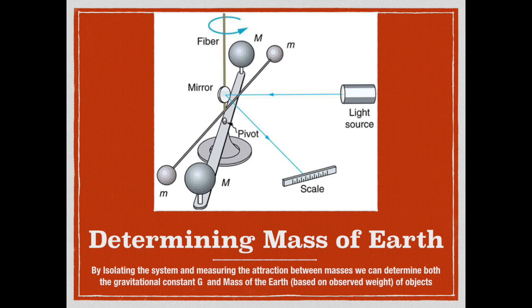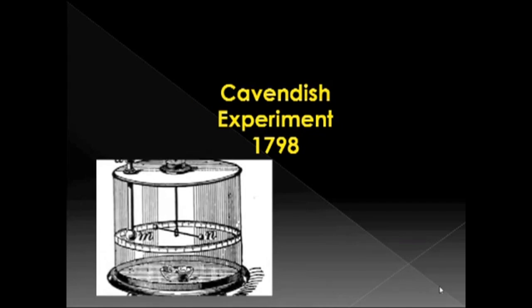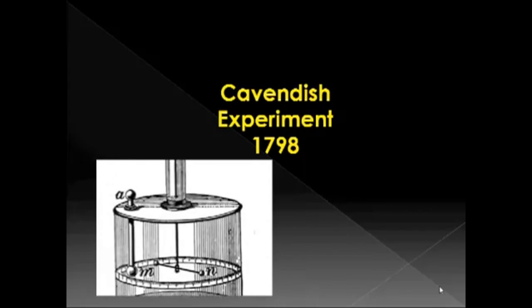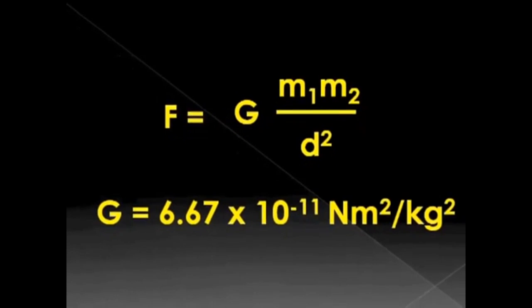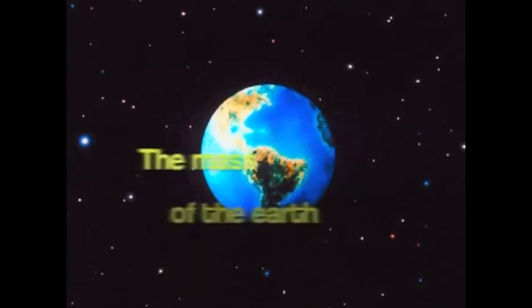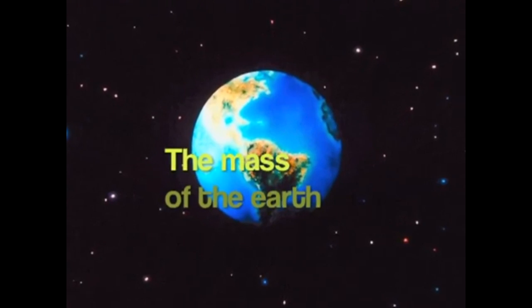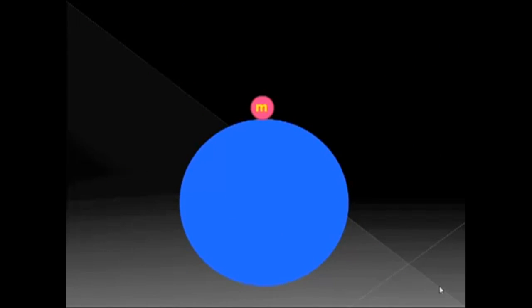Once we have g, the gravitational constant, the magic begins. Newton gave us the formula f is g m1 m2 over d squared. But he didn't have instruments sensitive enough to measure the constant g. He didn't know what it was. It took many years later and a man named Cavendish to use a torsion balance to measure this very tiny constant. And he found that the value of this constant was 6.67 times 10 to the minus 11 newton meters squared over kilograms squared. The day they found that constant, they also were able to find the mass of the Earth.